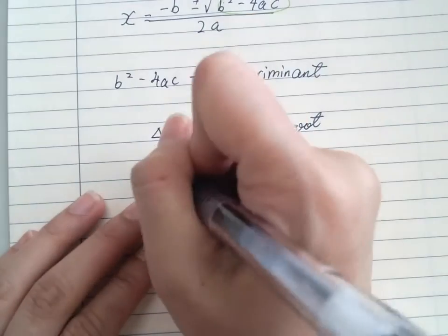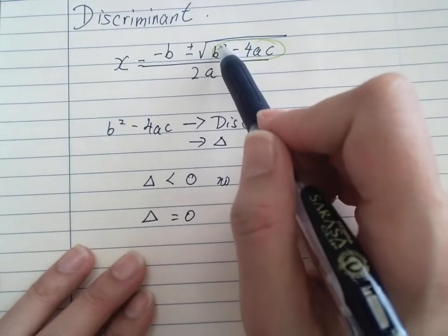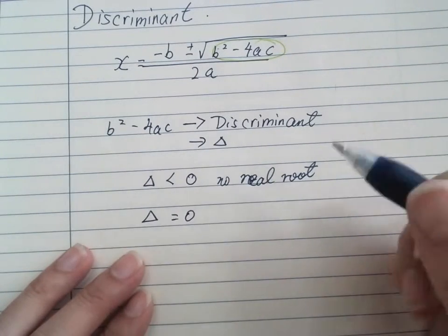And if it equals to 0, which means that this bit will not be happening, because square root of 0 becomes 0. So you have only one answer.